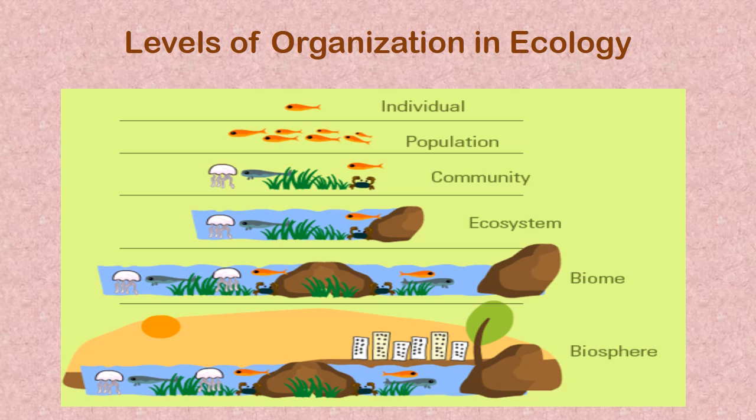This picture shows the levels of organization of the ecosystem. In ecology, we start with the individual organism or species, which grows to become a population. In a particular habitat, various species of organisms make up the community. The living and non-living factors together make up the ecosystem, various ecosystems come together to form a biome, and various biomes together form the biosphere.